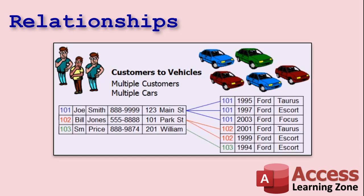Each customer has their own unique customer ID — Bill Jones is 102, Sam Price is 103. By looking at the vehicle table you can see who owns each car and relate that back to the customer information. We don't have to copy all of Joe Smith's information onto each car record.